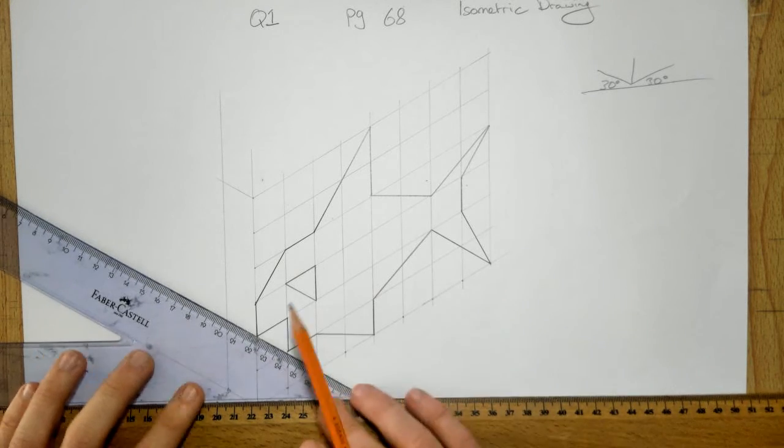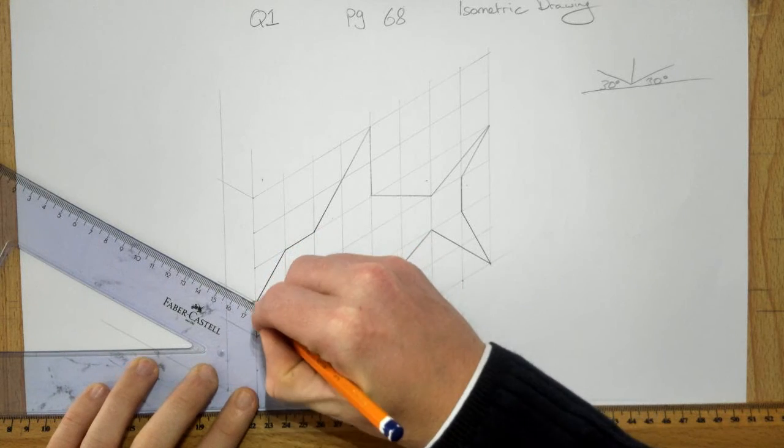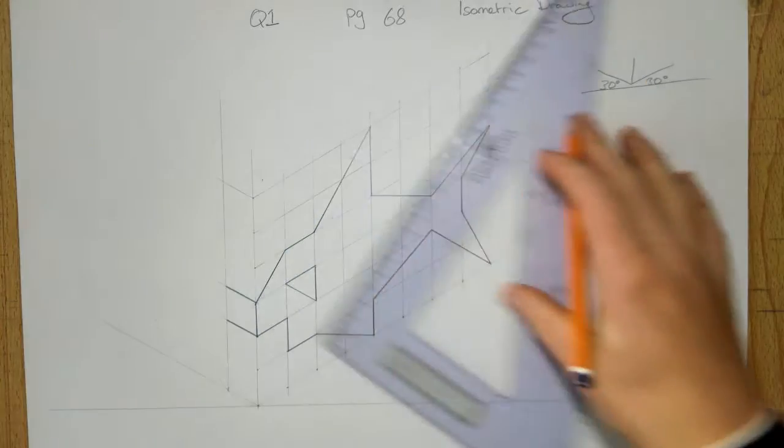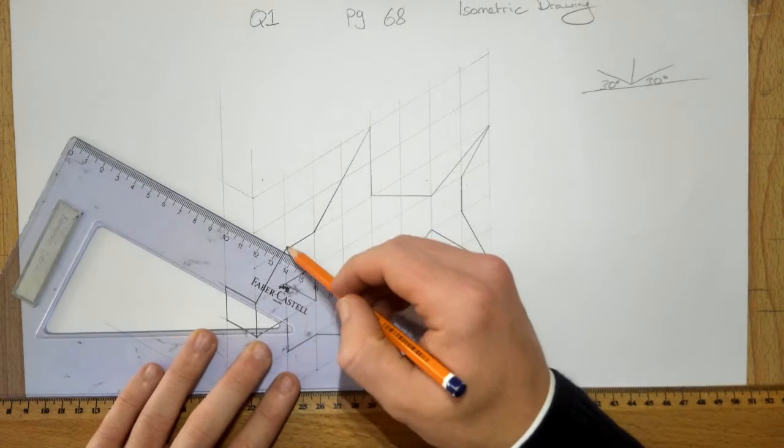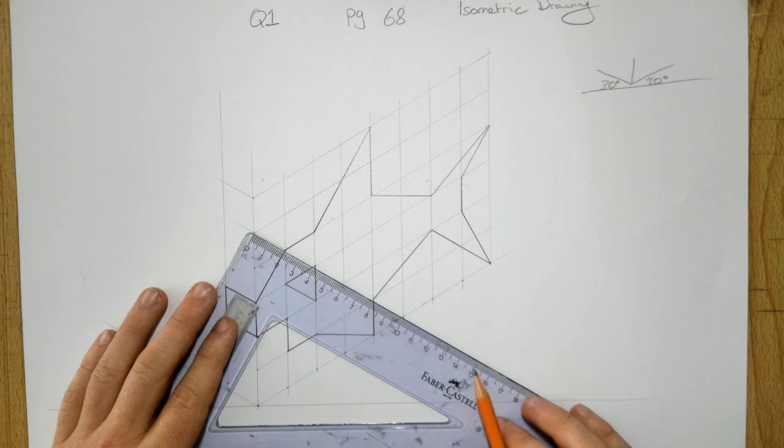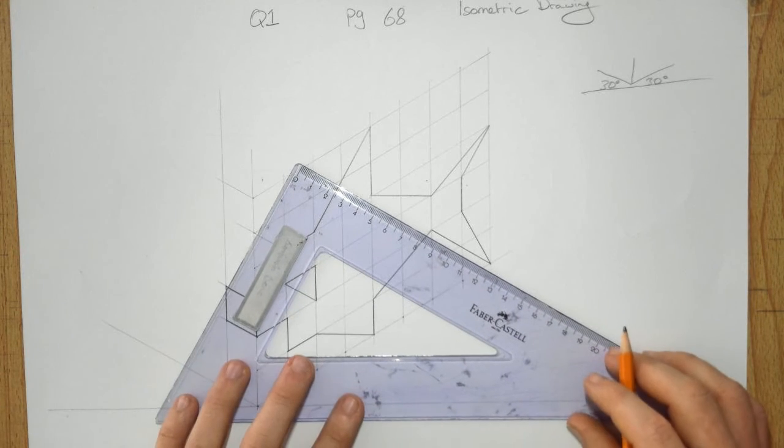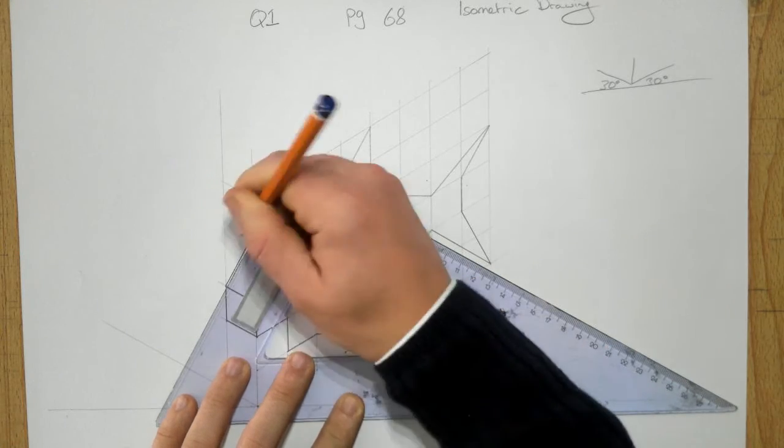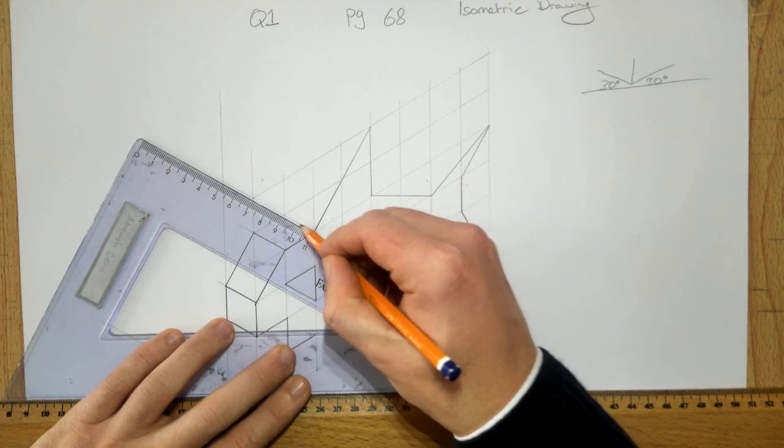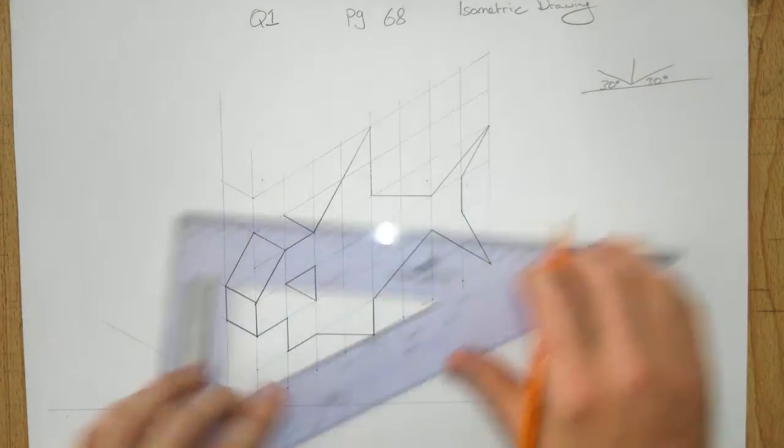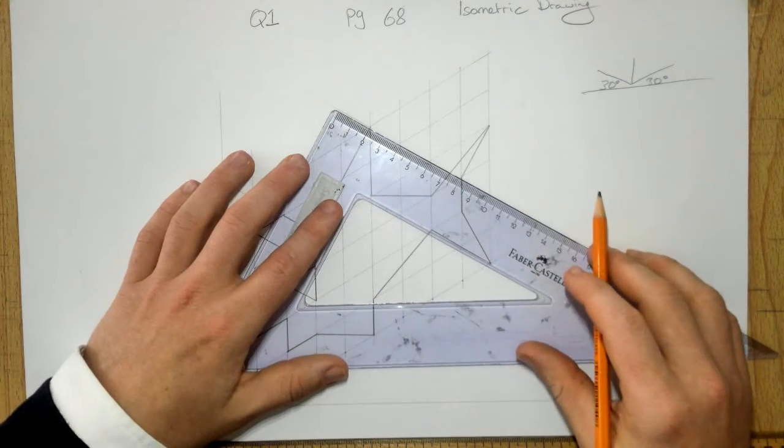Next, all these things are going out 20 mil at 30 degrees. These two here, do light lines. I'm going to measure out here 20 mil. And it's actually the width of the box, which is handy. I'm going to measure out here 20 mil.